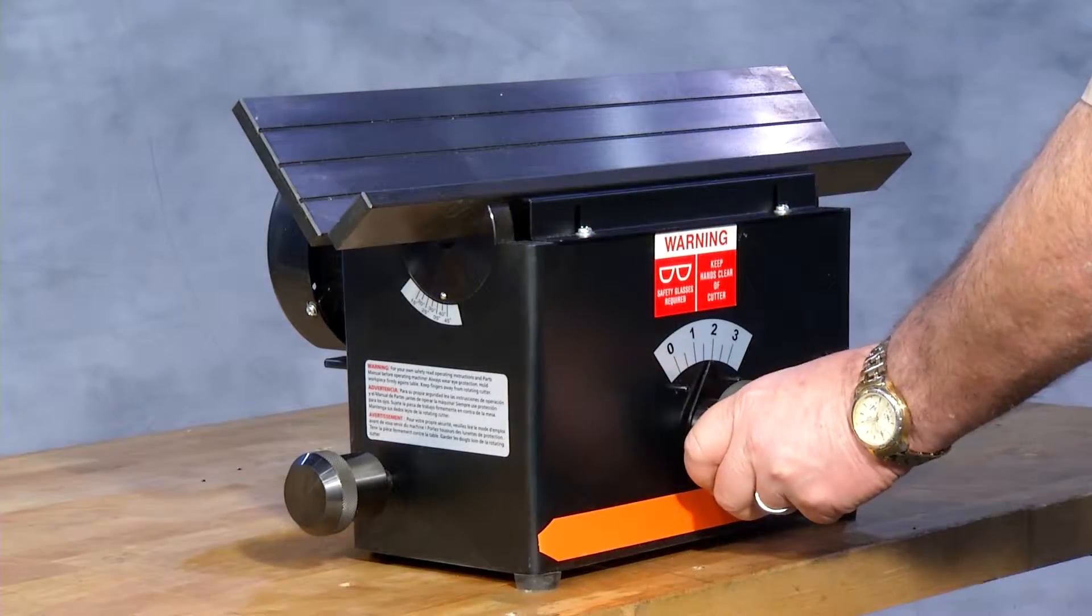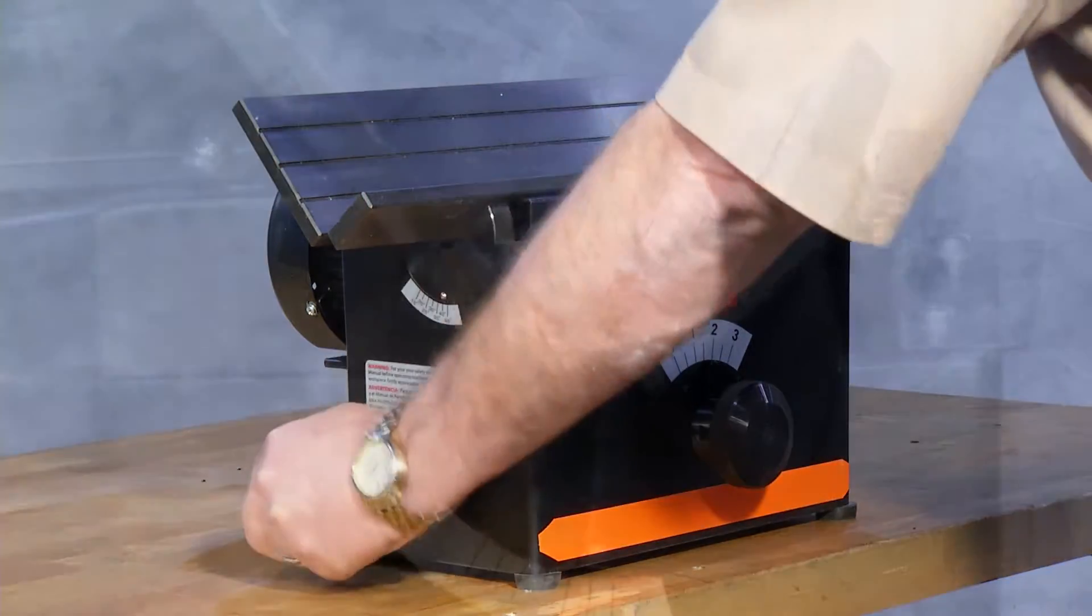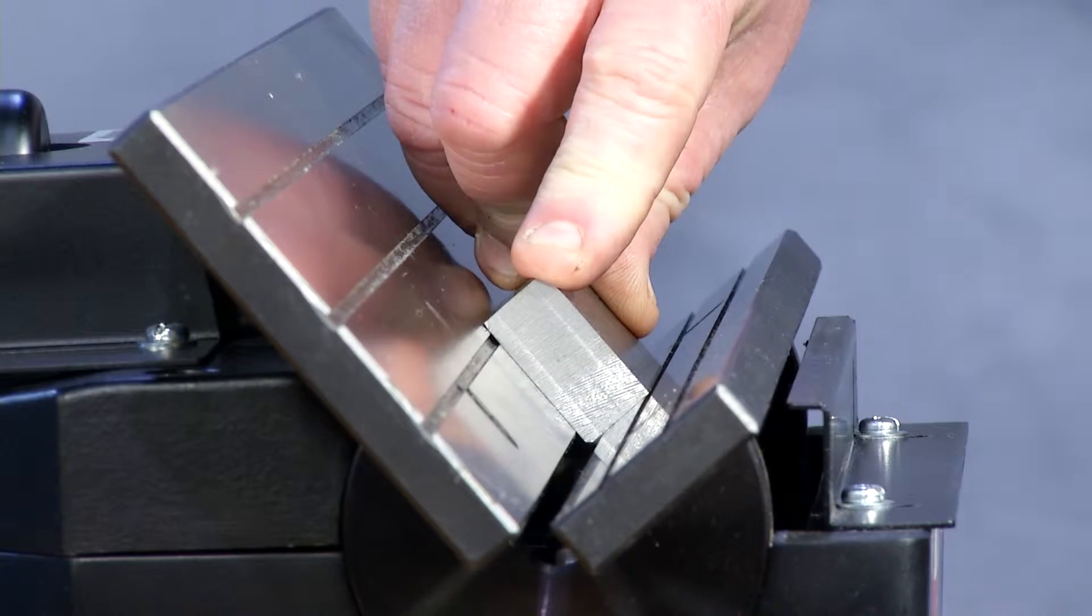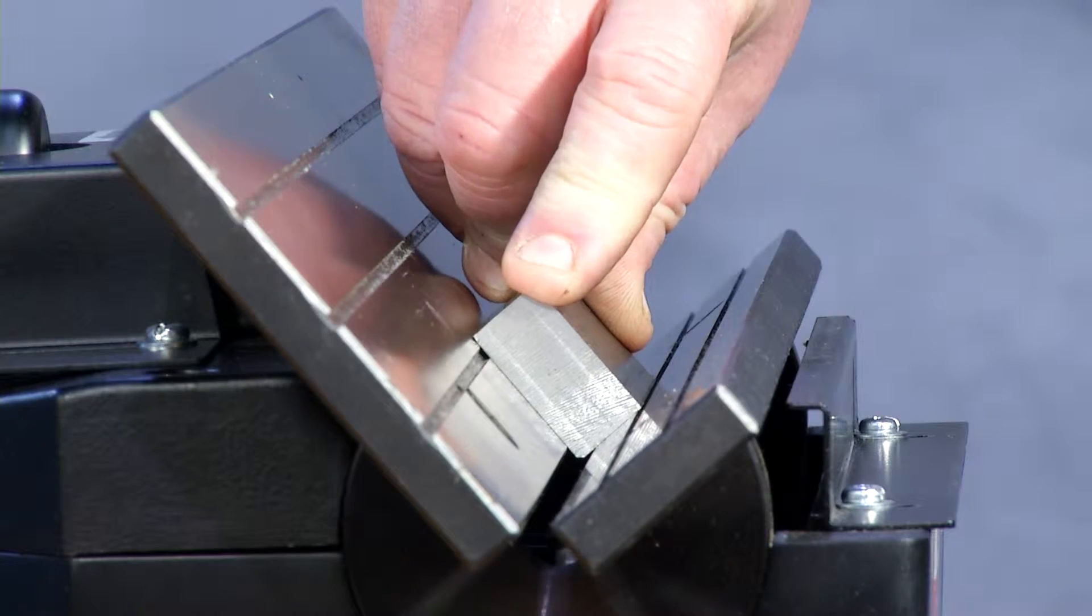This machine has a 19 inch v-block which makes it easy to support any size part. This machine uses a milling type cutter head with six standard carbide inserts.